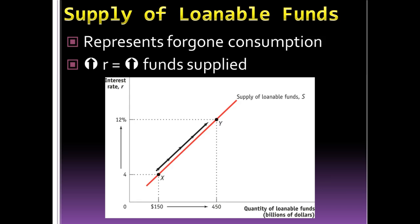When it comes to the supply of loans, the supply represents foregone consumption. If you're not spending, you're saving. If you're saving money in the banking system, it's available to be lent. If the interest rate on loans is higher, you get more money back when lending, so there's a greater incentive to save. We see an upward sloping supply curve — if the interest rate goes from 4% to 12%, people get more return on their savings and will save more money.